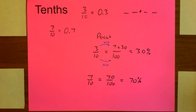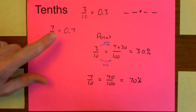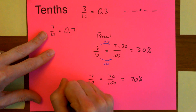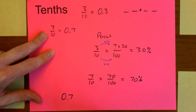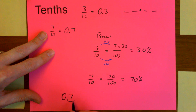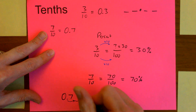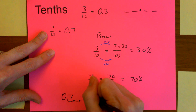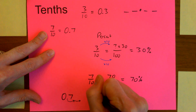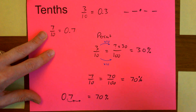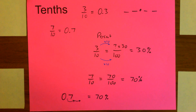Another way you can think about it with the decimal is just moving the decimal place. If I'm multiplying by one hundred, let's move it one, two places to the right, and that's going to give me seventy percent. So that's the tenths — definitely the easiest one to manage.